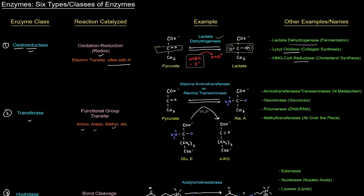Here we have a transamination reaction catalyzed by a transaminase — the 'trans' tells you it's transferring something, specifically an amino group, also called an aminotransferase. This enzyme acts on alanine. Starting with pyruvate and glutamate: pyruvate has a carbonyl group and glutamate has an amino group. Glutamate gives its amino group and hydrogen to pyruvate, while pyruvate gives its carbonyl group to glutamate. Glutamate becomes alpha-ketoglutarate and pyruvate now has the amino group — we simply transferred the amino group.